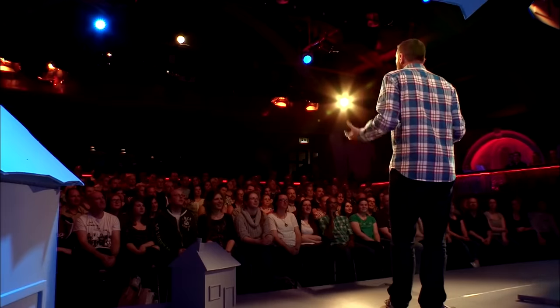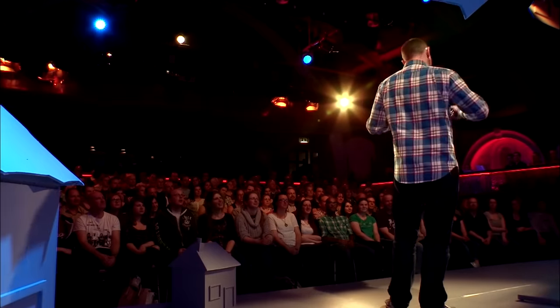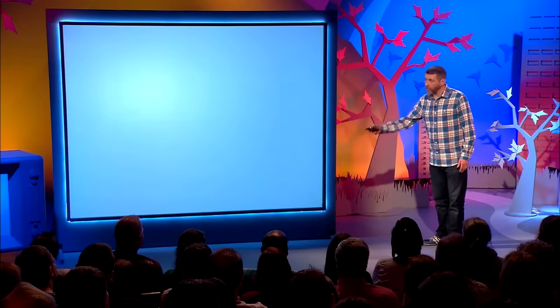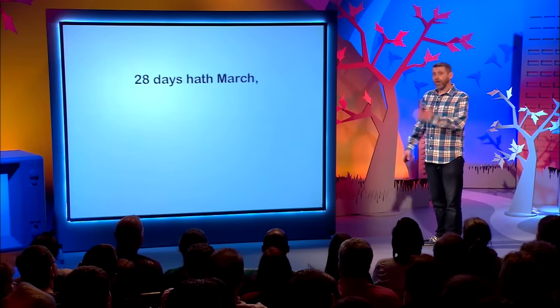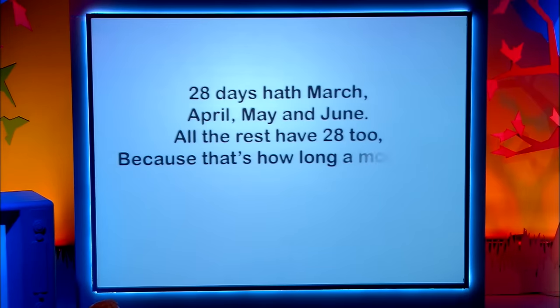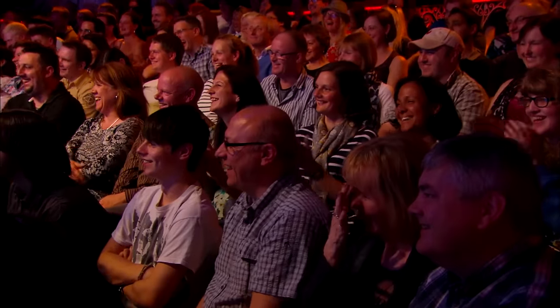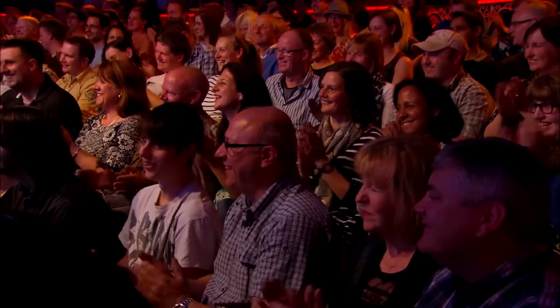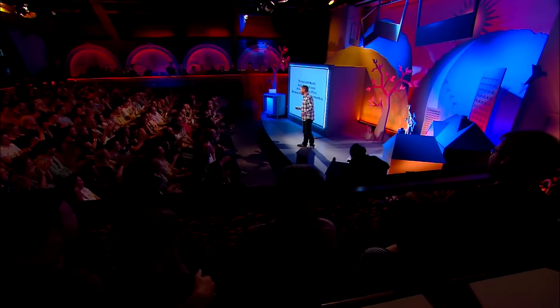Everything flows in a very orderly fashion from that point on. We have talked previously on this show about the old '30 days hath September' rhyme. I think we can all agree this system improves upon that rhyme. The rhyme now goes: '28 days hath March, April, May and June — all the rest have 28 too.' Because that's how long a month is. Much, much easier.